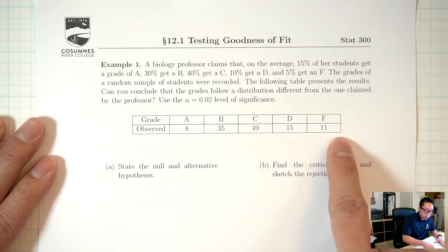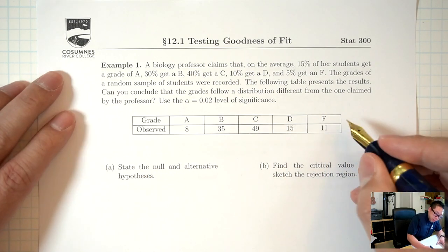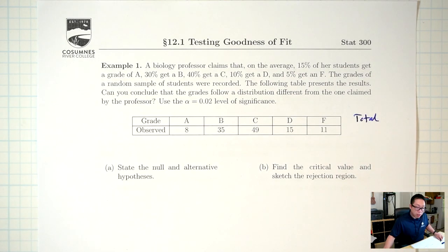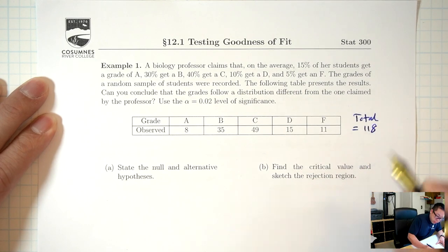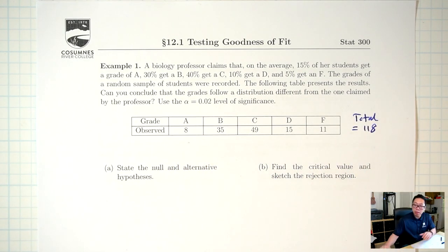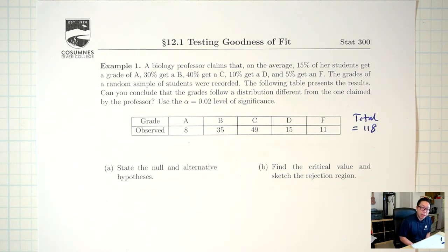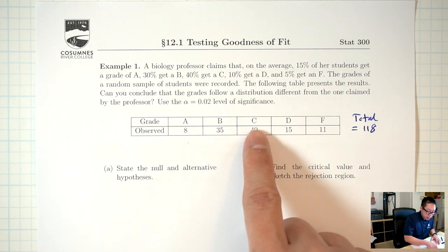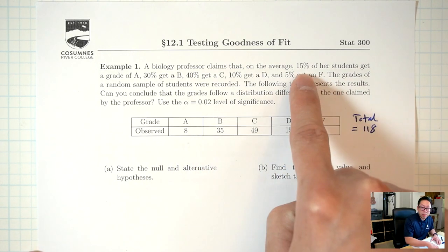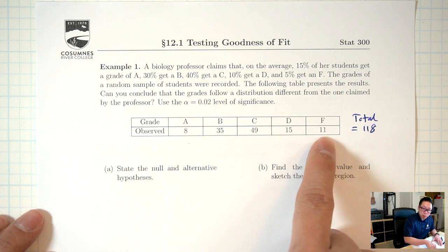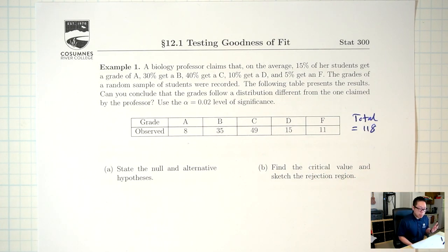What percent is that? Let's find the total number of people. Adding up: 8 + 35 + 49 + 15 + 11 = 118 people total. Eight out of 118 is roughly 0.068, so roughly 6.8% got an A. If we only had A's, this would just be a one proportion test. But since we have B, C, D, and F as well, you can think of a goodness-of-fit test as a multiple proportion test.